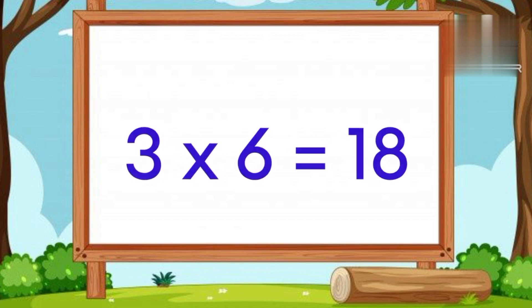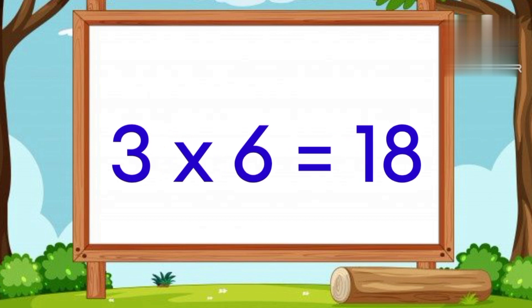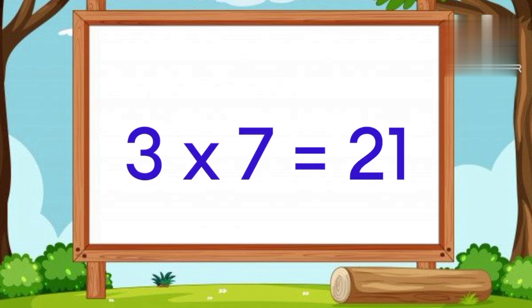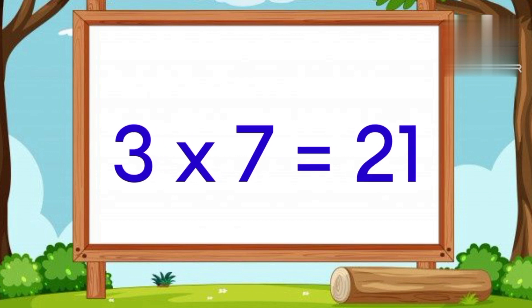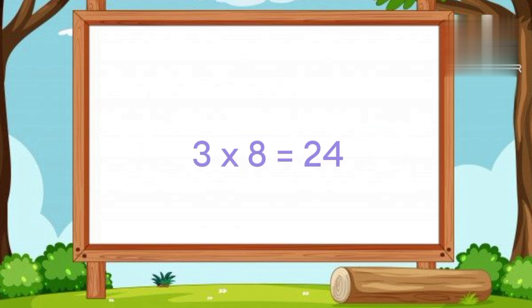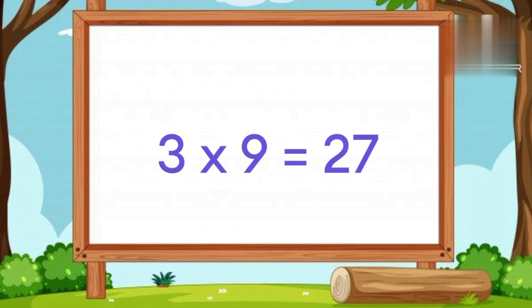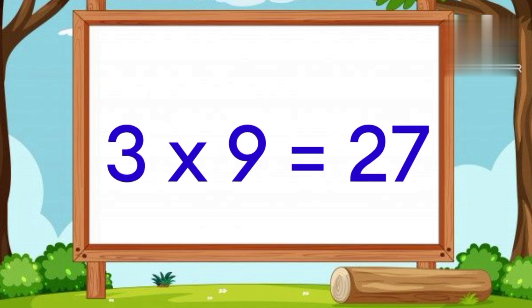Three Six's a eighteen. Three Seven's a twenty-one. Three Eight's a twenty-four.